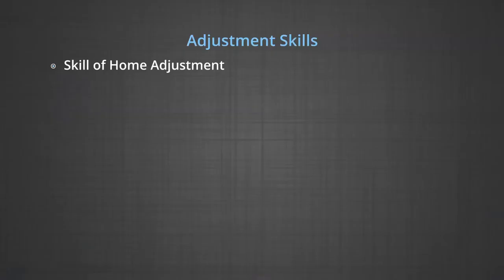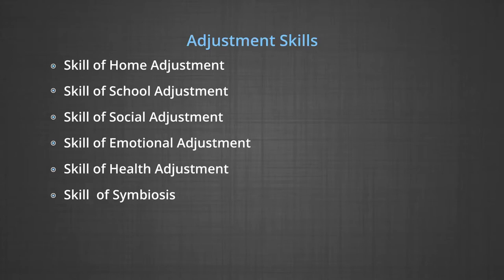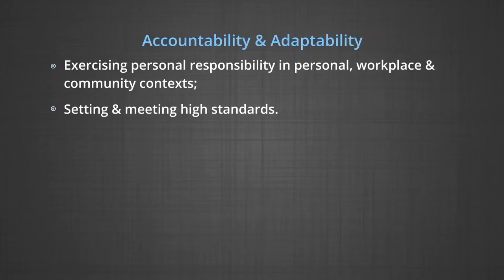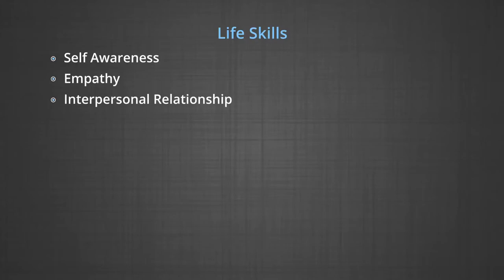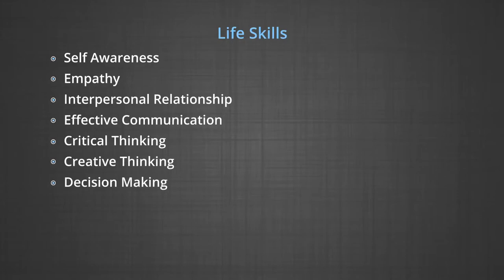Adjustment skills are also included in social skills: skill of home adjustment, school adjustment, social adjustment, emotional adjustment, health adjustment and skill of symbiosis. Accountability and adaptability includes exercising personal responsibility in personal, workplace and community contexts and setting and meeting high standards. Social skills are also included in life skills like self-awareness, empathy, interpersonal relationship, effective communication, critical thinking, creative thinking, decision making, problem solving, coping up with emotions and coping up with stress.